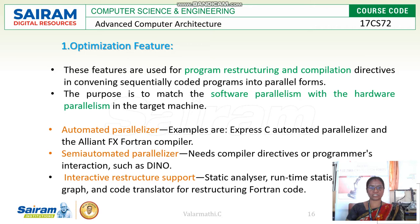The first feature is the optimization feature. This feature is used for program restructuring and compilation in sequentially coded programs. These features are used for program restructuring and compilation in sequentially coded programs, and these will be converted into parallel forms.